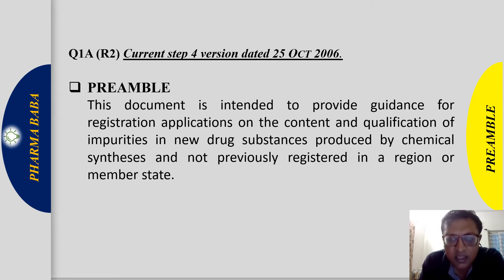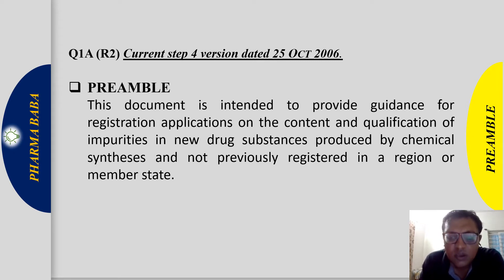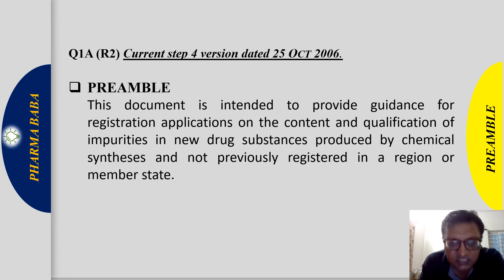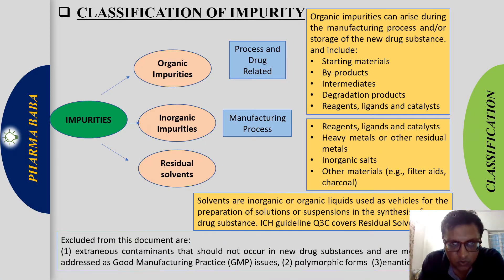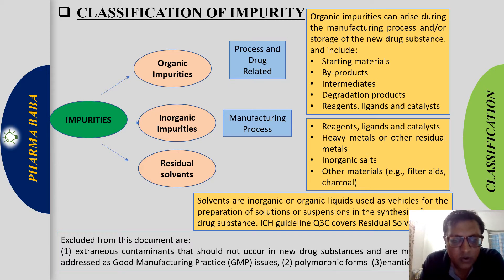The specification covers impurities and qualification — if an impurity is more than the qualification threshold, how to qualify the impurities in the new drug substance, meaning the API. Impurities in the document are basically classified in three types: organic impurities, inorganic impurities, and residual solvents.